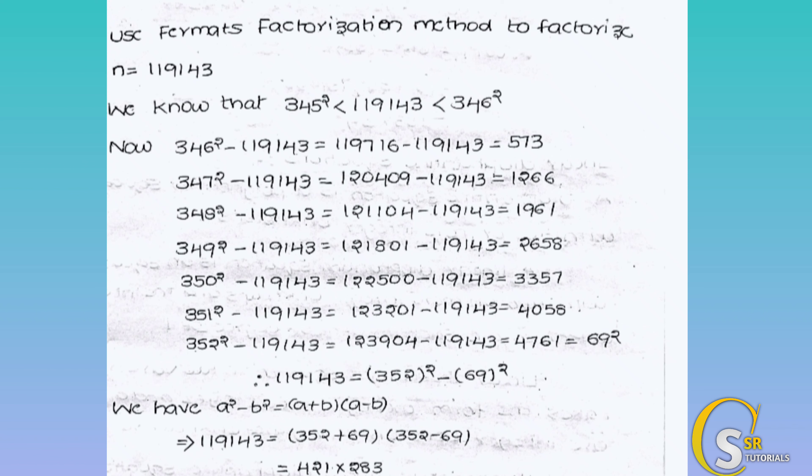We continue this process, incrementing the value until we get a perfect integer. Next, try 348: 348 squared is 121104, minus 119143 equals 1961. This is also not a perfect square, so we move on.